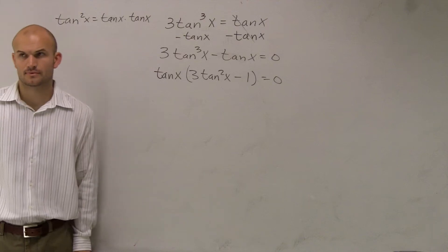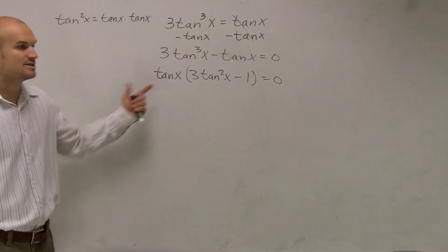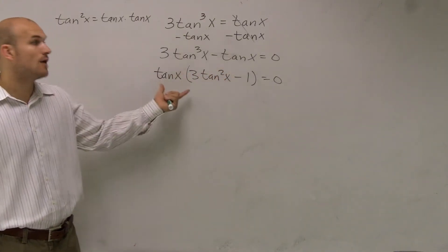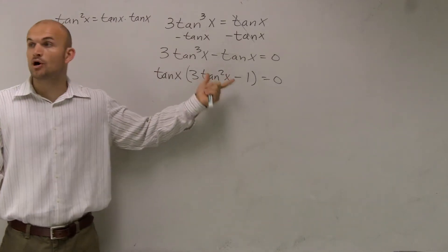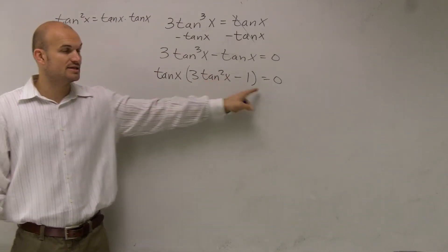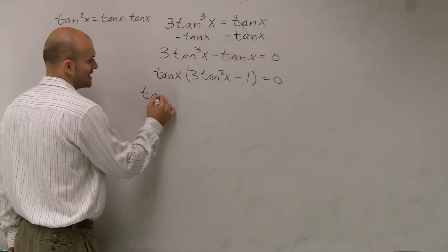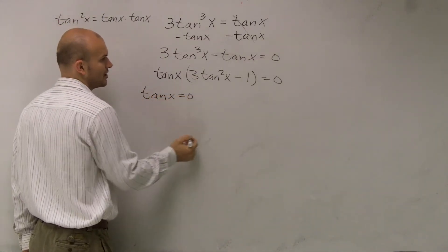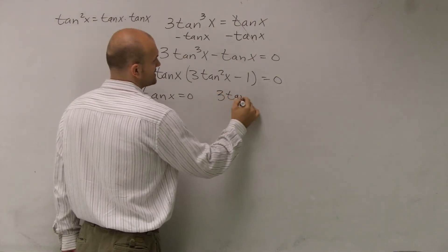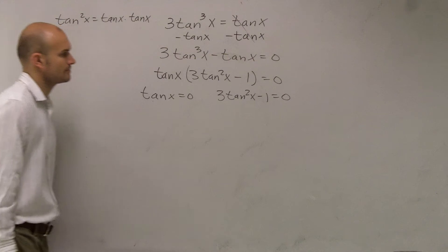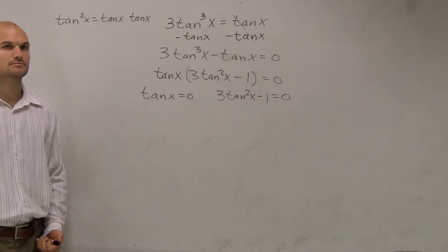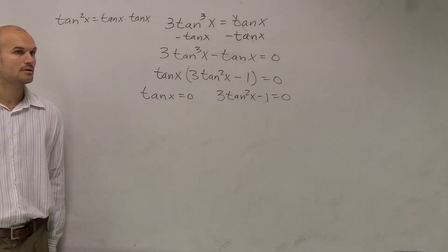Does everybody follow me? Okay. So now since I've factored out my tangent of x, now what I have is a 0 product property where I notice that I have two terms that are multiplied by each other to give me 0. Therefore, now I can rewrite this as tangent of x equals 0 and 3 tan squared of x minus 1 equals 0. Okay.